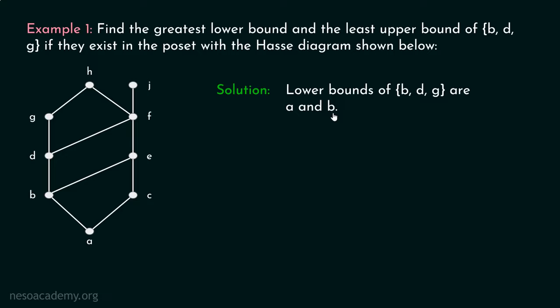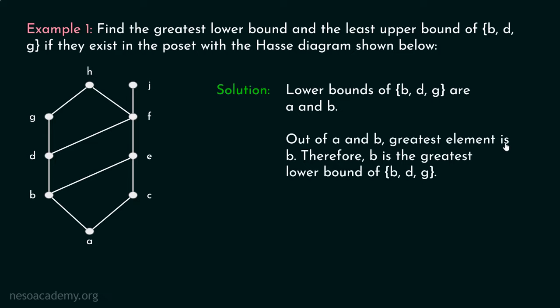Now we have to find the greatest lower bound out of these two. We can see that the greatest lower bound is B, because every other lower bound is related to B. There are only two lower bounds, and A is related to B while B is not related to A. Therefore B is considered as the greatest lower bound of B, D, G. Out of A and B, the greatest element is B; therefore B is the greatest lower bound of B, D, G. So it is clear that the greatest lower bound of B, D, G is B, and the least upper bound of B, D, G is G.